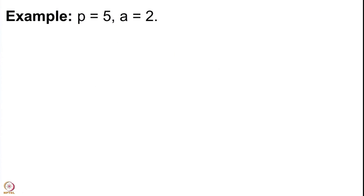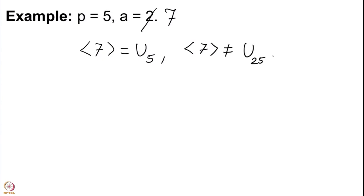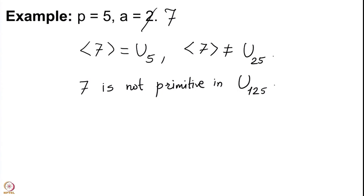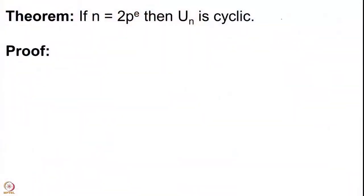The next example from our last lecture was a=7. We observed that 7 is a primitive element for U(5), but we saw that it is not a primitive element for U(25), and clearly 7 is not going to be primitive in U(125). This is because to have something primitive modulo 125 we need the element to be primitive modulo 25 to begin with.